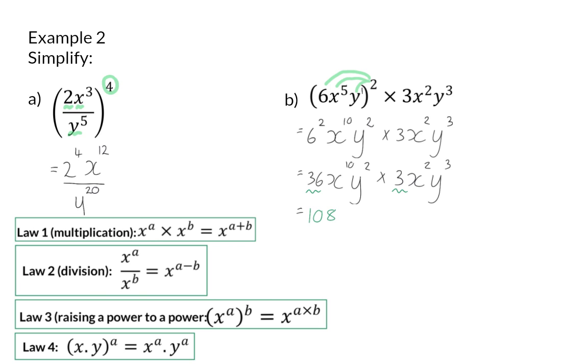Next, for the variables, I will use law number 1. And to multiply the same bases, I will add their exponents. So this will give us x to the power of 12. And the same goes for y when we add, we will get 5.